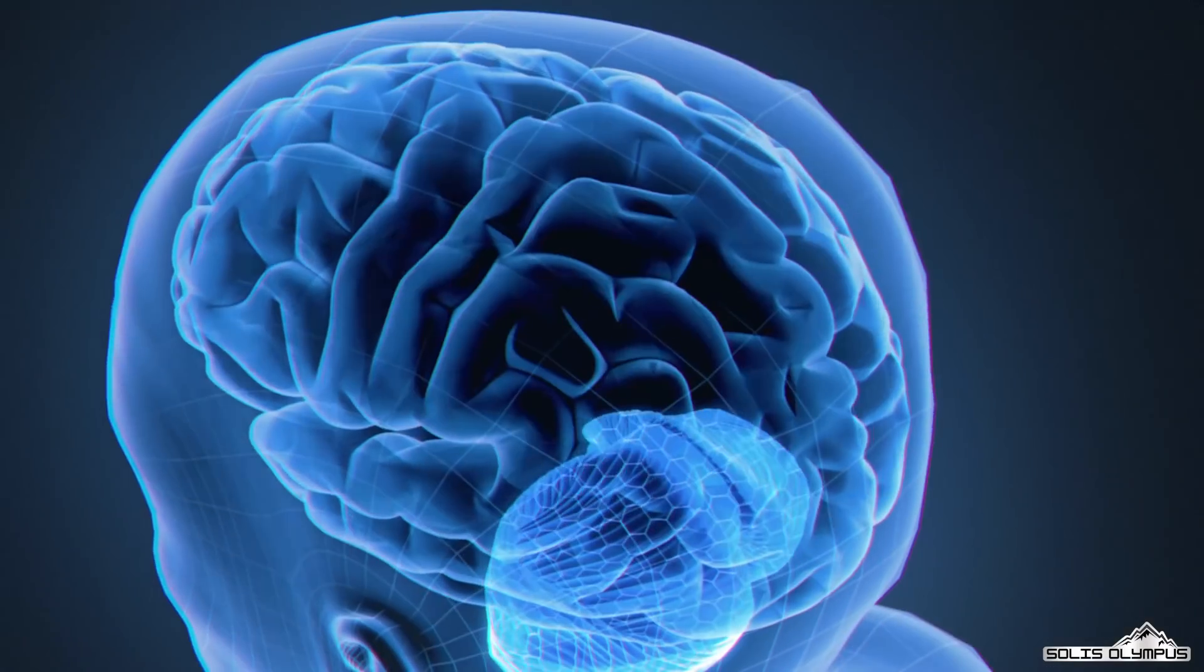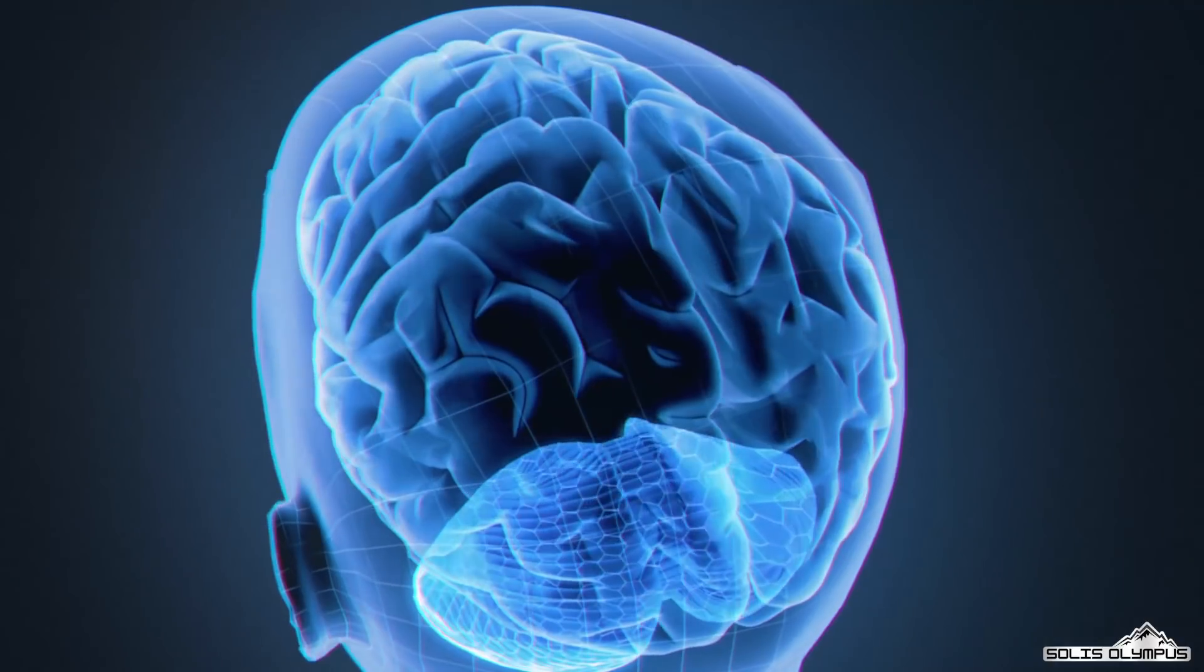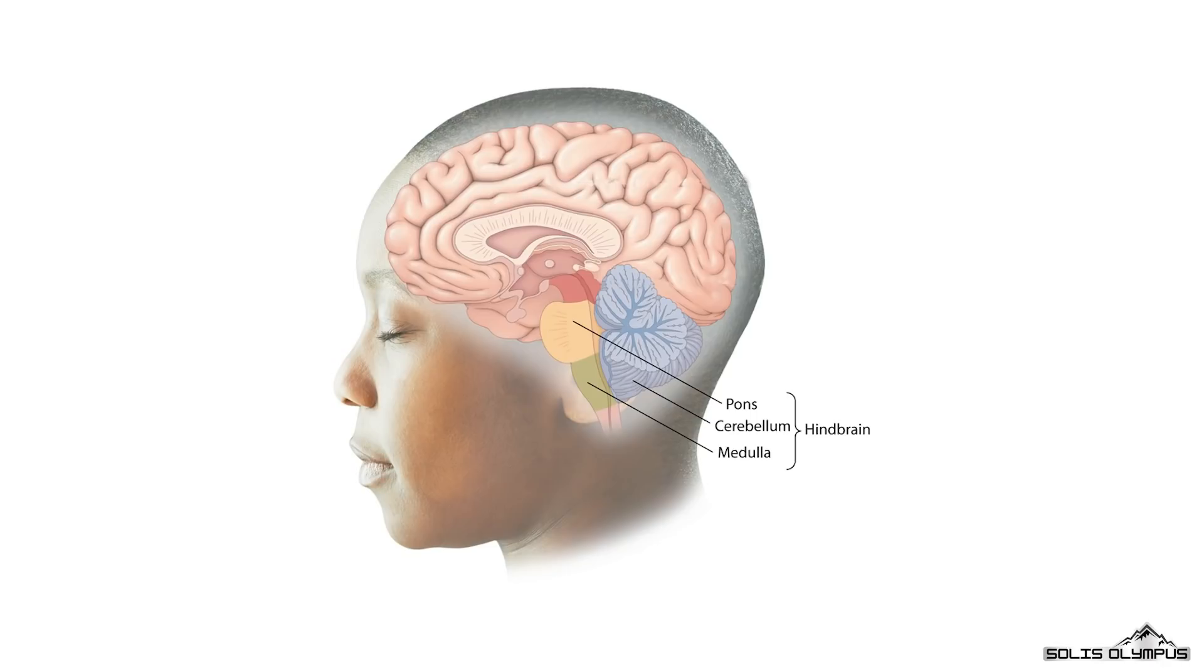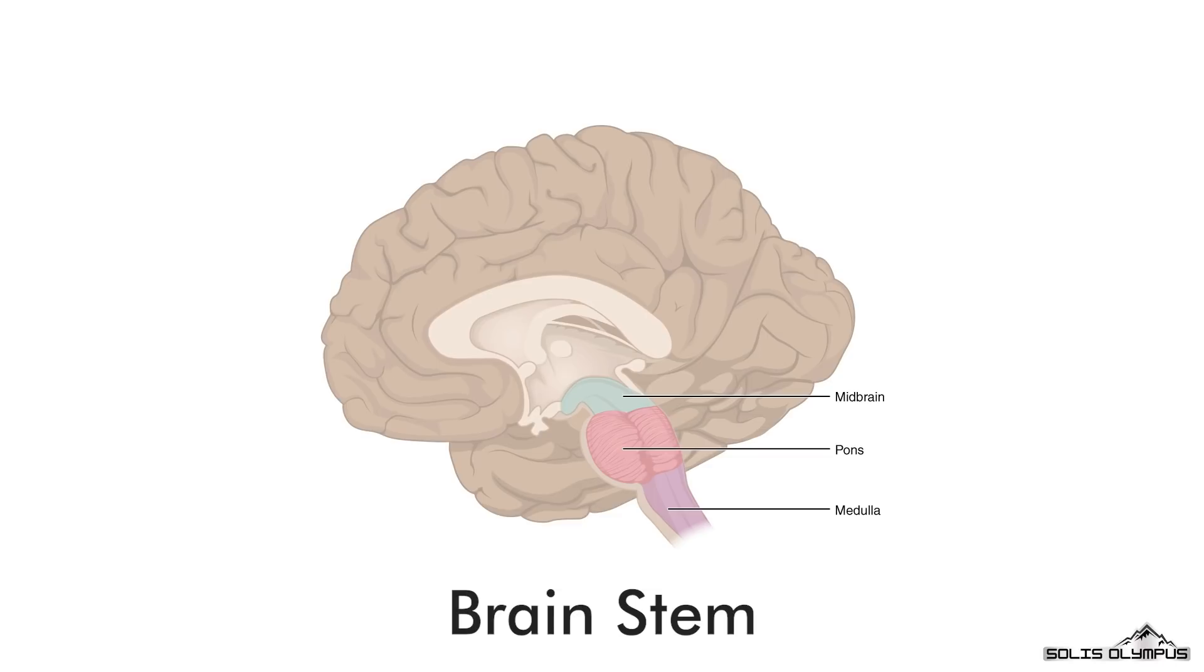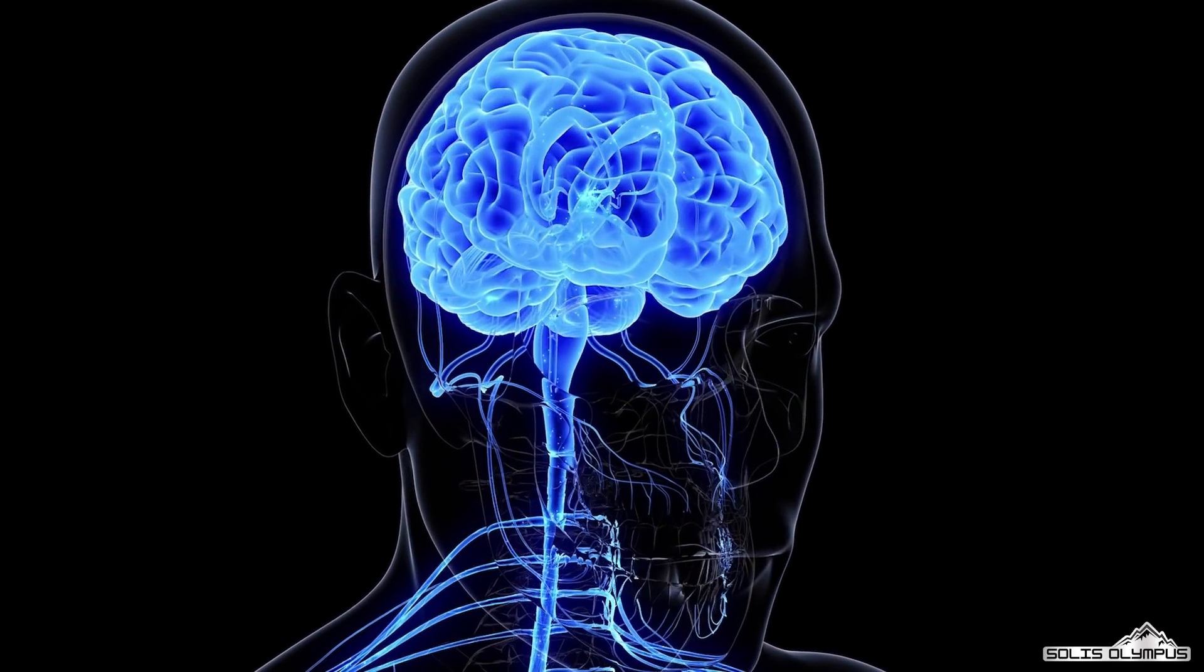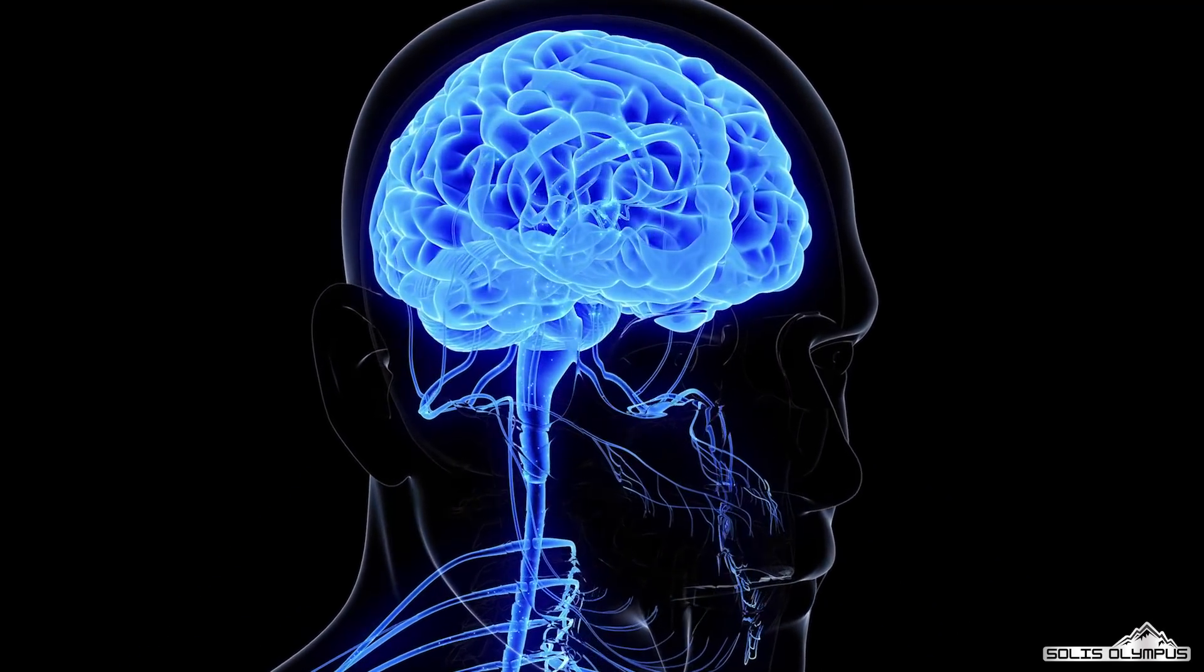Hindbrain. The hindbrain is one of the three major regions of our brains, located at the lower back part of the brain. There are three main parts of the hindbrain: pons, cerebellum, and medulla oblongata. You've probably heard about the brain's stem before. Well pons, medulla, and midbrain combine to form brain stem. It acts like a bridge for sending information between different parts of the brain and spinal cord.